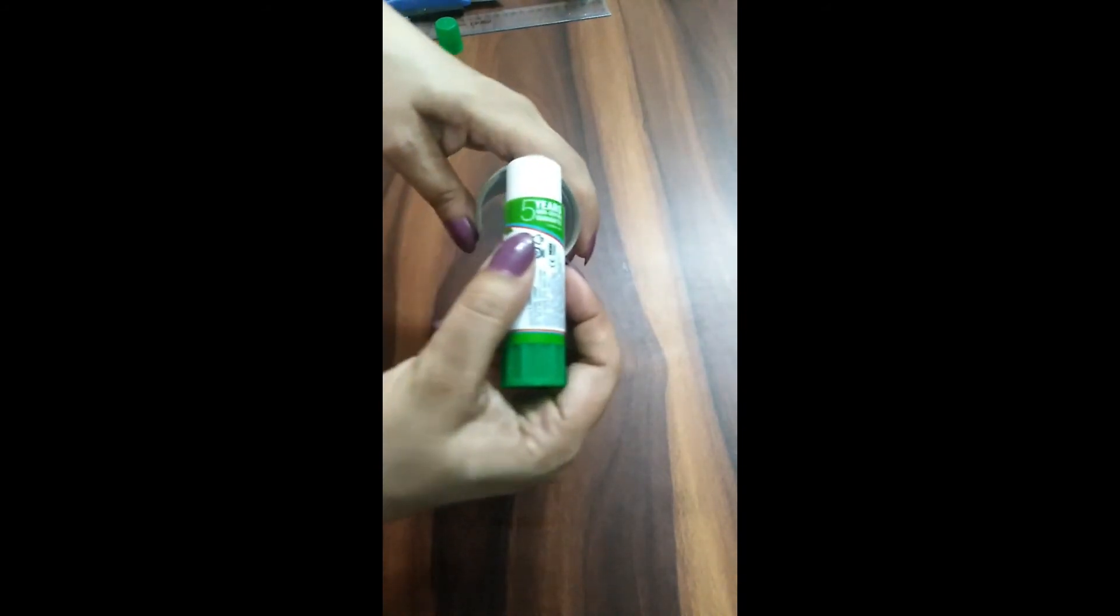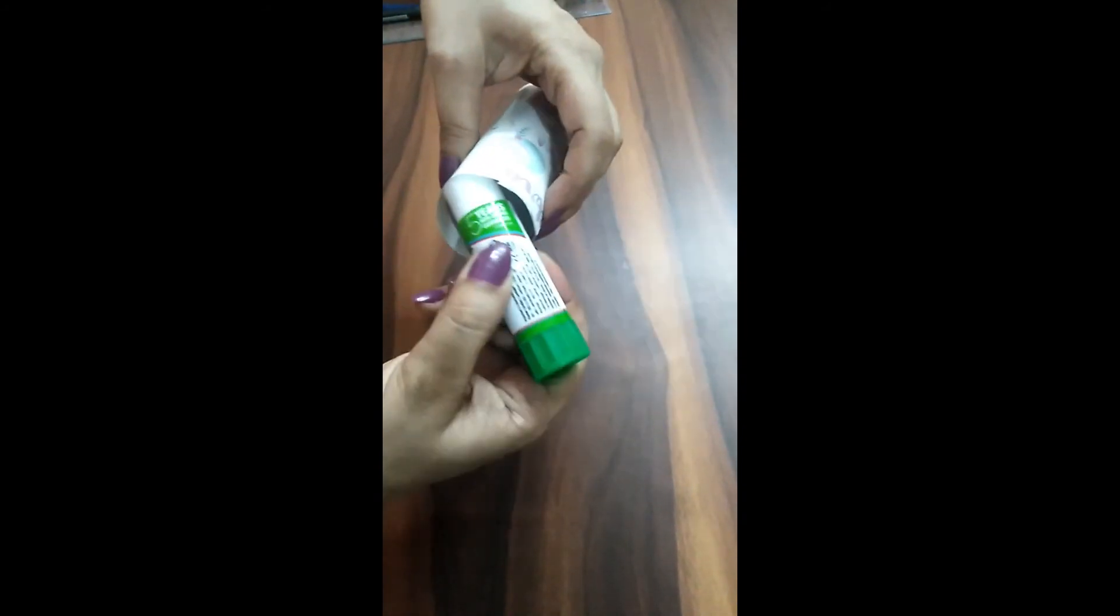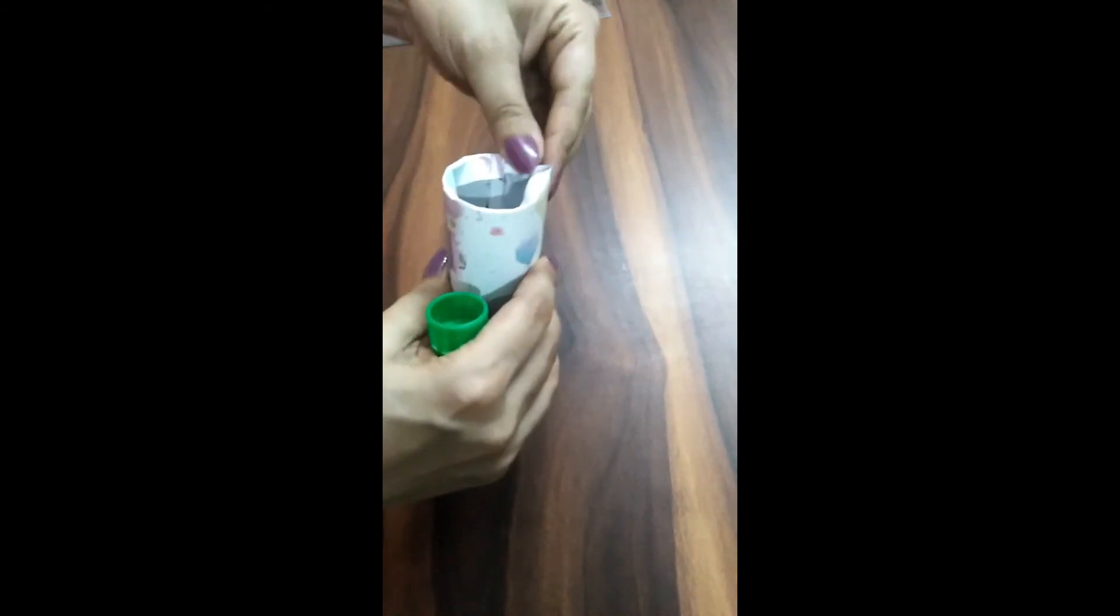Once this is done, now next step is to paste these extra part of the paper. So we apply little feverstick along this and press it inside.